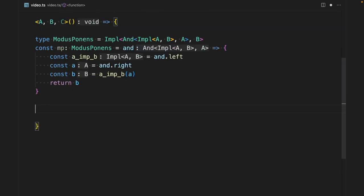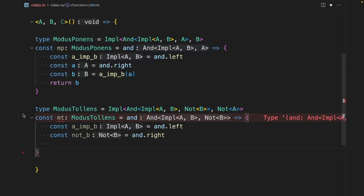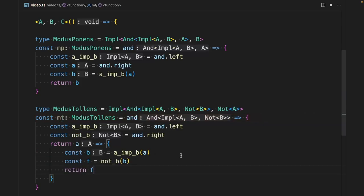Next, modus tollens. Given A implies B and not B, then not A must follow. After having decomposed our premise, we now need to prove not A and this time it doesn't seem obvious. We need to remember that not A is a function from A to false. So let's assume A and now try to prove false. Again, by combining A and A implies B, we derive B. With both not B and B, we can produce false. And there's our proof.